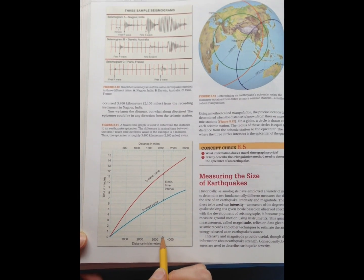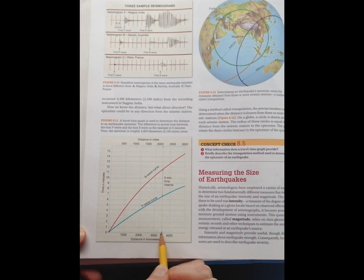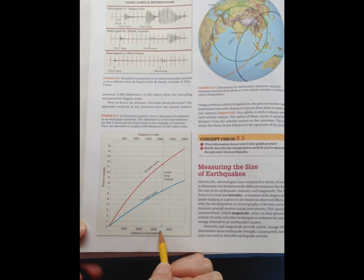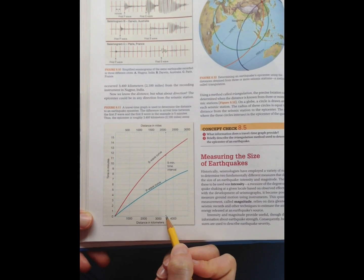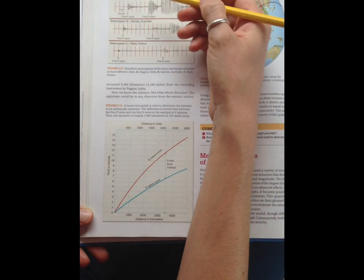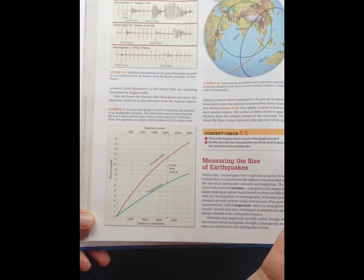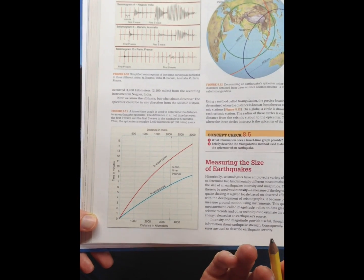And here we see that that intersects the X-axis at about 35, maybe 3400 kilometers. Okay, so that means that the earthquake occurred 3400 kilometers away from Nagpur, India. But that's 3400 kilometers in any direction. So we don't know exactly what direction it came from.